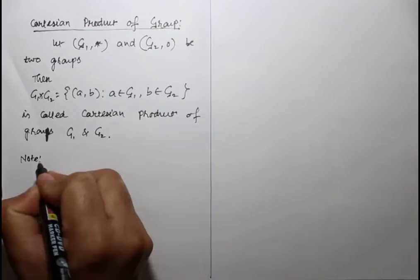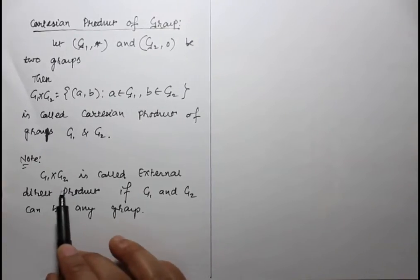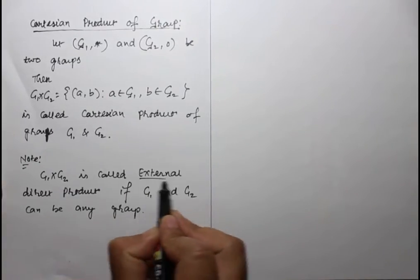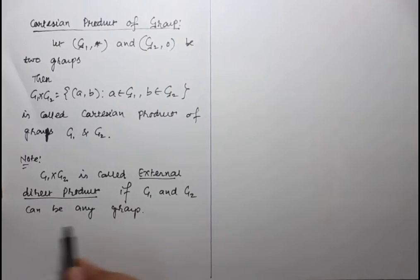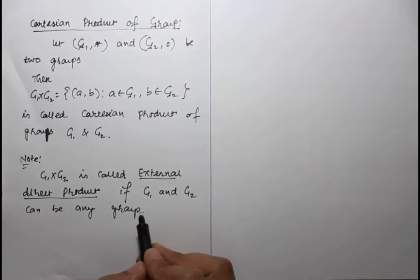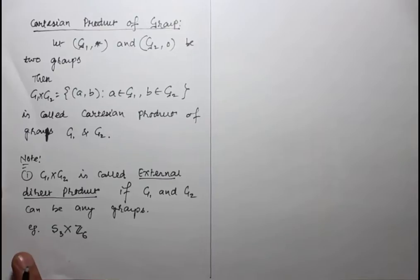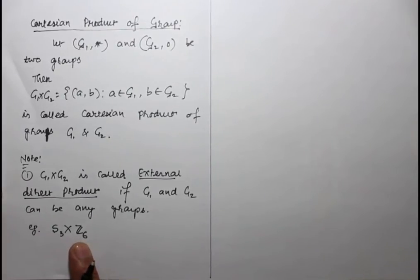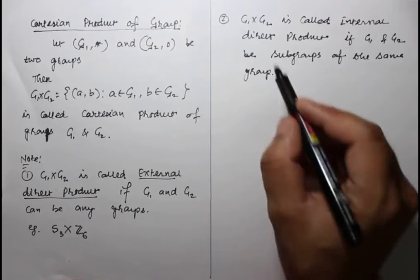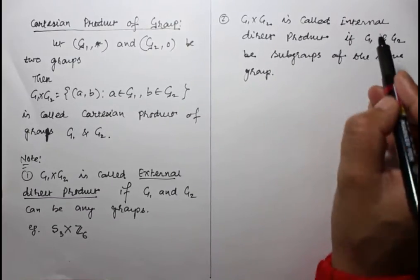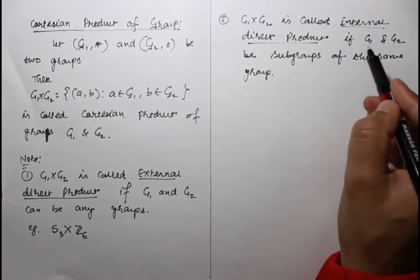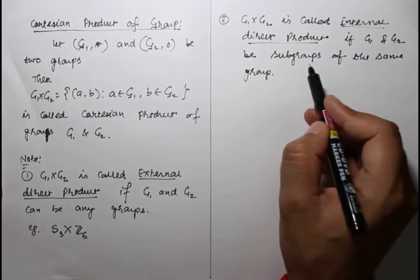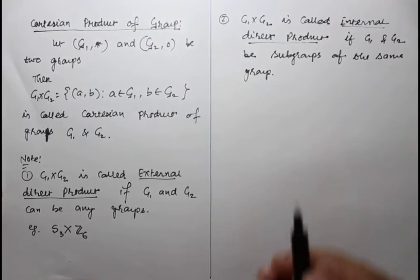Note: G1 cross G2 is called the external direct product if G1 and G2 can be any groups. For example, S3 cross Z6 is an external direct product. G1 cross G2 is called the internal direct product if G1 and G2 are subgroups of the same group.